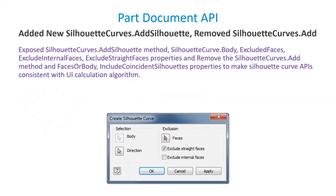There is a modification to RS Silhouette Curve — a new method called Add Silhouette has been exposed. Silhouette Circular Body and Curved Body values are included, and Closed Internal Faces properties have been implemented. In earlier versions, the Add method, Faces Or Body property, and Include Coincident Silhouettes properties have been removed to be consistent with the UI calculation algorithm.